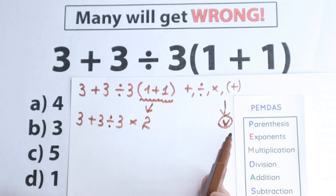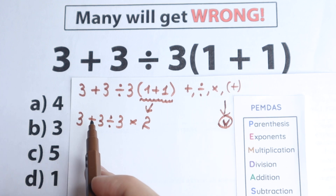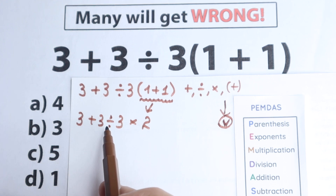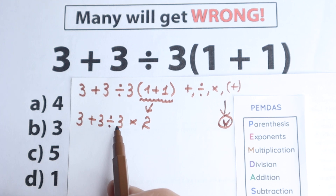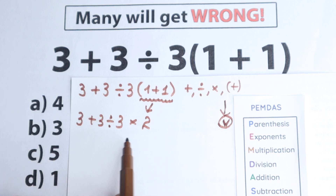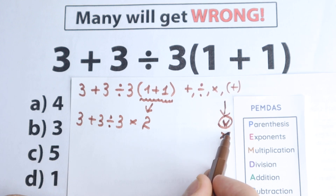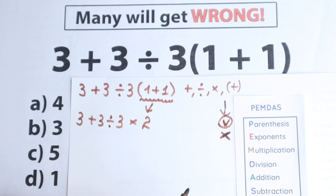The next step is exponents. Let's look at the question — maybe we have exponents, squares, or cubes. I don't see any of those. We don't have any exponents, squares, or cubes, so we just skip this part. This is really great because with exponents the question would be more complicated.